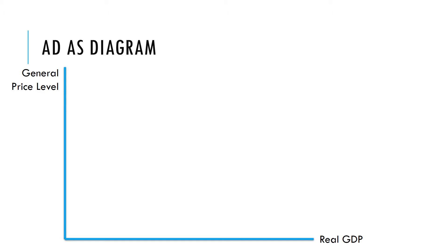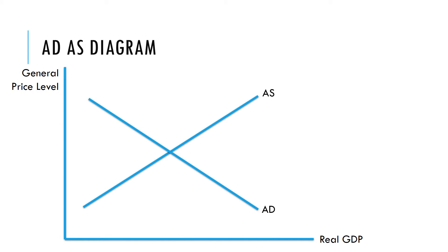What we do now is put the two together in what's known as an aggregate demand aggregate supply diagram, or ADAS diagram for short. On our axes we can plot both aggregate demand and aggregate supply and use this as a model to show the effect of changes in the economy on various factors.